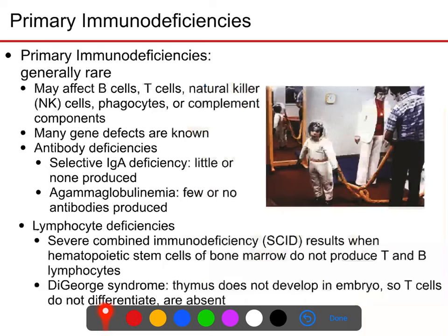Primary immunodeficiencies are generally rare and often fatal, because they are congenital — they happen when you are very young and vulnerable to disease. They can affect B cells, T cells, natural killer cells, phagocytes, or complement components, and are typically caused by genetic mutations. Examples include selective IgA deficiency and agammaglobulinemia, where you simply don't produce many antibodies of any type.